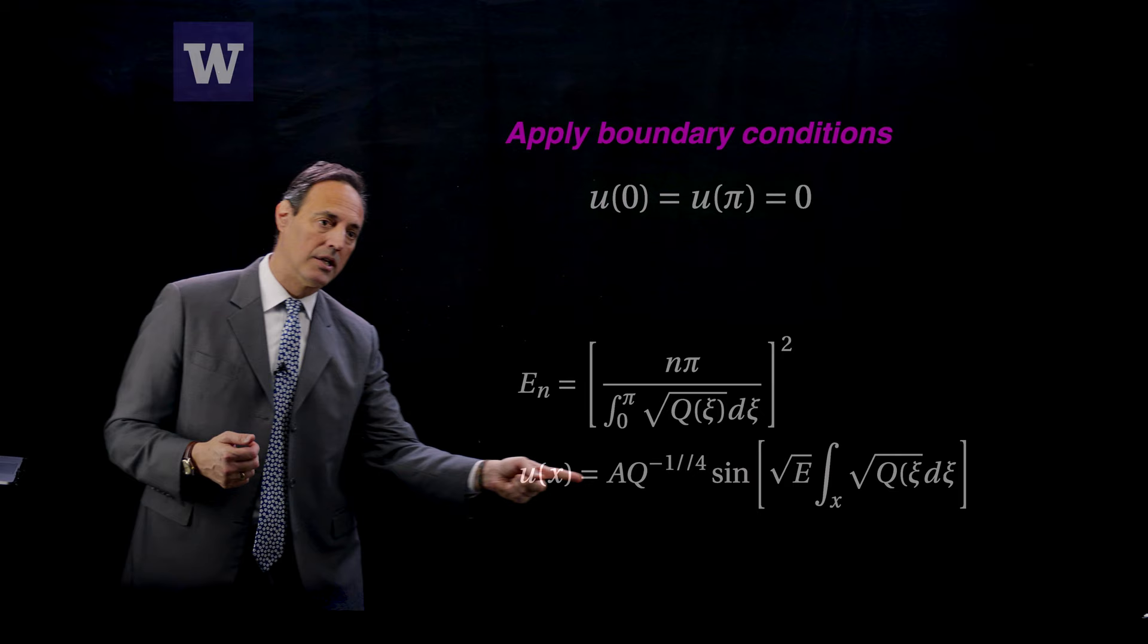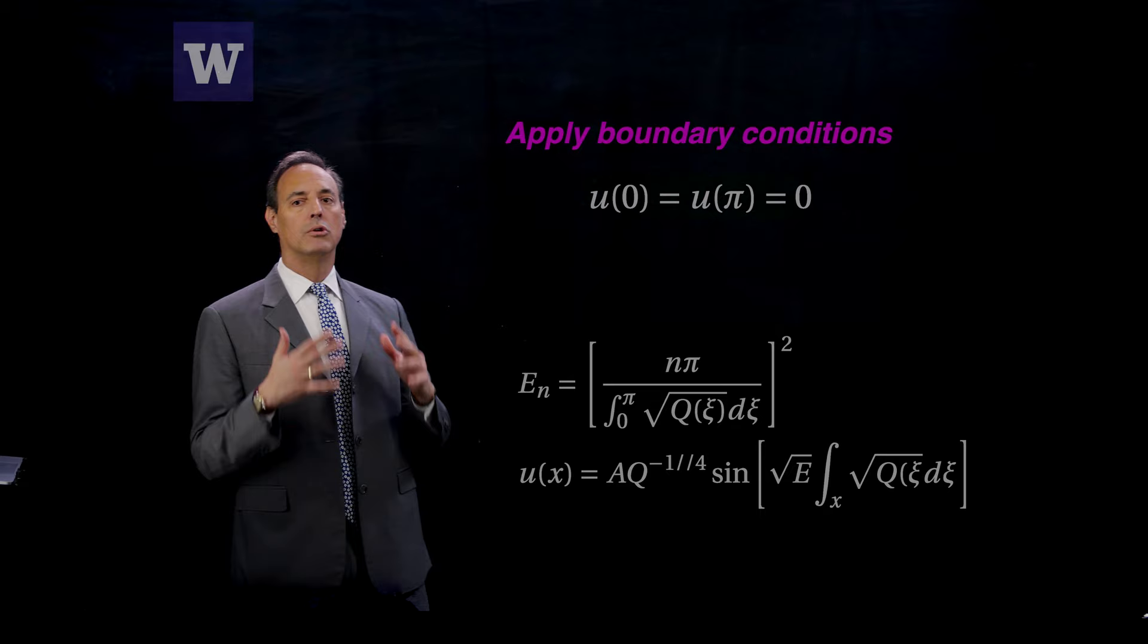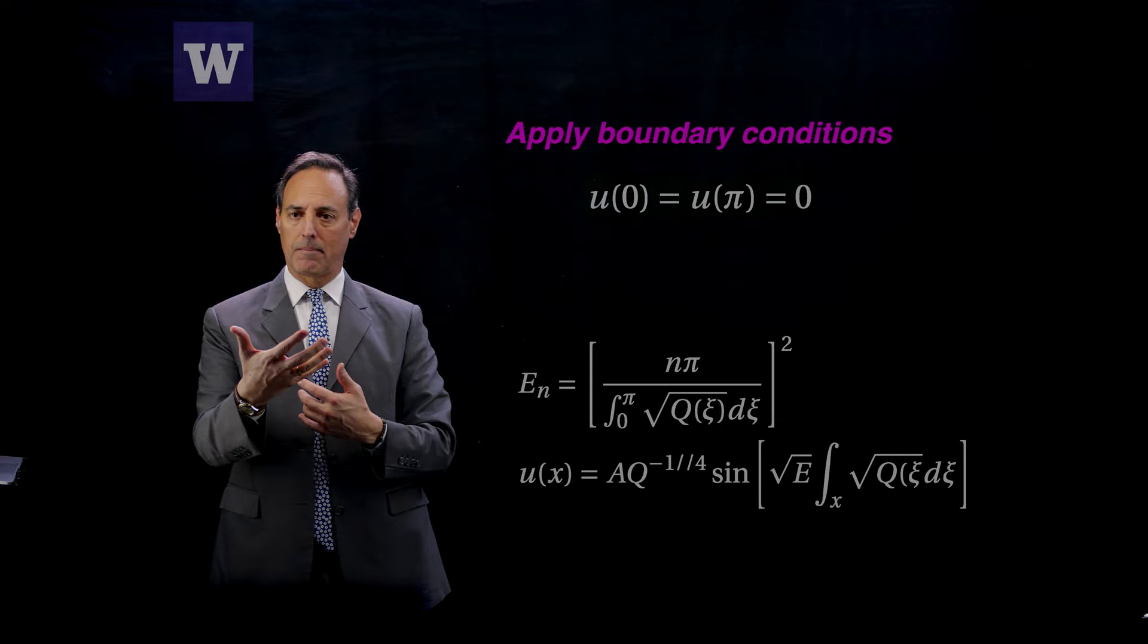The eigenvalues are here, n pi over the integral of q of x, square root of q of x squared. And your eigenfunctions are here. u of x is, look at this, q to the minus the fourth sine of square root of e, and that should be actually e to the n, integral of q of x. So that's what you have for your solution type for this equation. So now all I have to do is figure out, if I give you a specific potential, q of x, then you could compute this. So in fact, let's go ahead and do that.